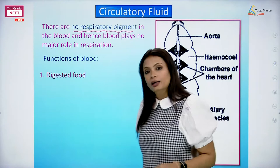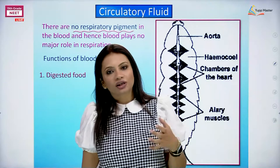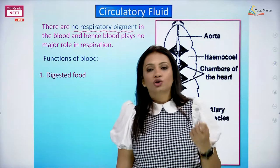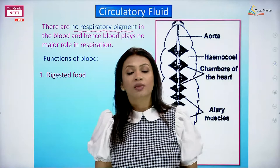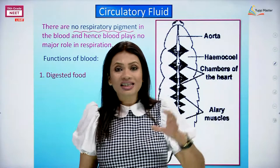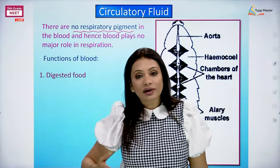First function: blood transports digested food. Whatever the cockroach is eating - as we saw in the digestive system last lecture - whatever is eaten will eventually be absorbed. After absorption, that absorbed food material in simplified form has to reach every cell of the body of the cockroach. So the nutrients get collected in the circulating fluid, go to the heart, and the heart makes it reach all the different body cells.